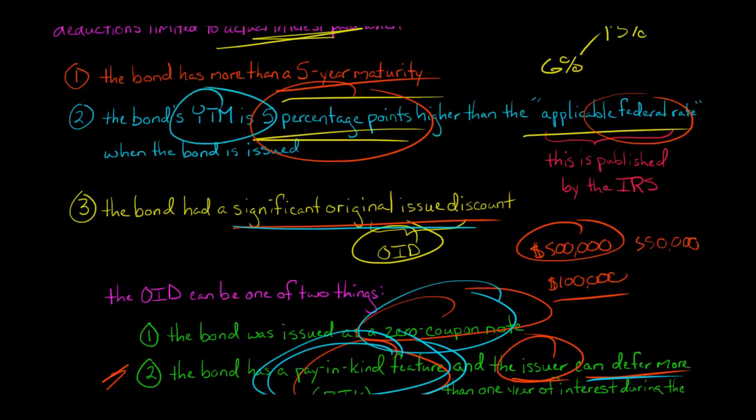So if you have a significant original issue discount, you have a high-yield bond, more than five percentage points higher than the federal rate, and you've got more than a five-year maturity, the issuer is not going to be able to take tax deductions for any interest until they actually pay the interest in cash.